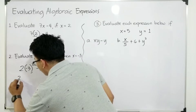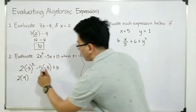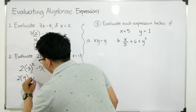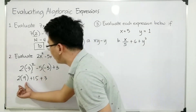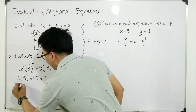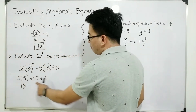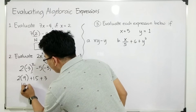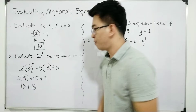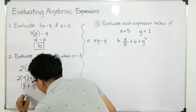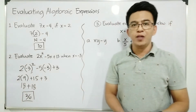So this will become 2 times 9, and negative 5 times negative 3 gives you plus 15, plus 3. Simplifying: 2 times 9 is 18, and 15 plus 3 gives you plus 18 also. Simplifying 18 plus 18, this gives you the final answer of 36. And this is the answer for item number 2 — as simple as that.